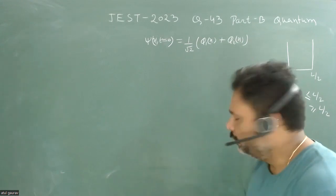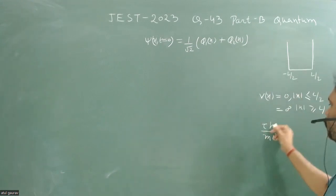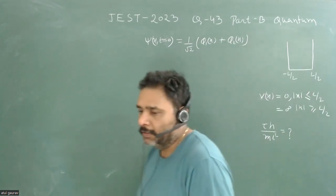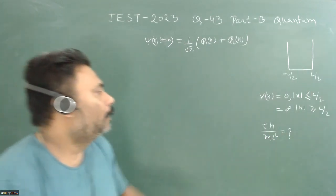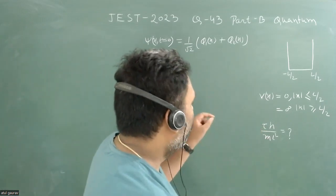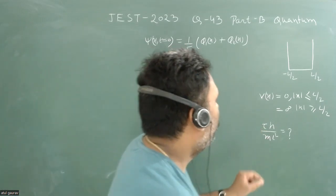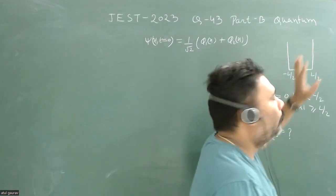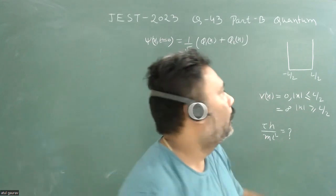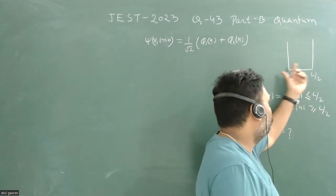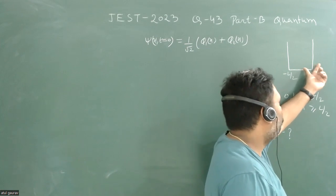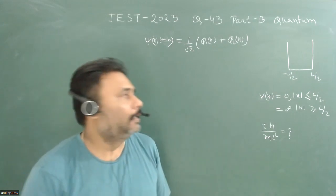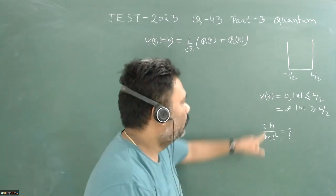We have to calculate the value of τ·h/(ml²), so we need the numerical value of this. τ is the minimum time for which the particle is equally likely to be found in either half of the box — 50% probability in the left half and 50% probability in the right half.